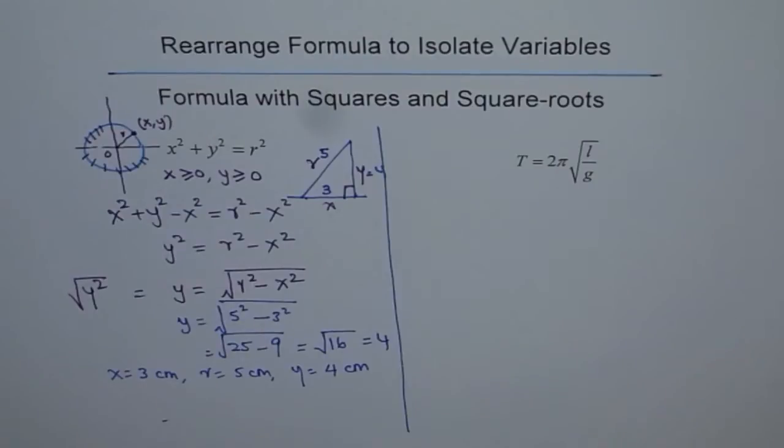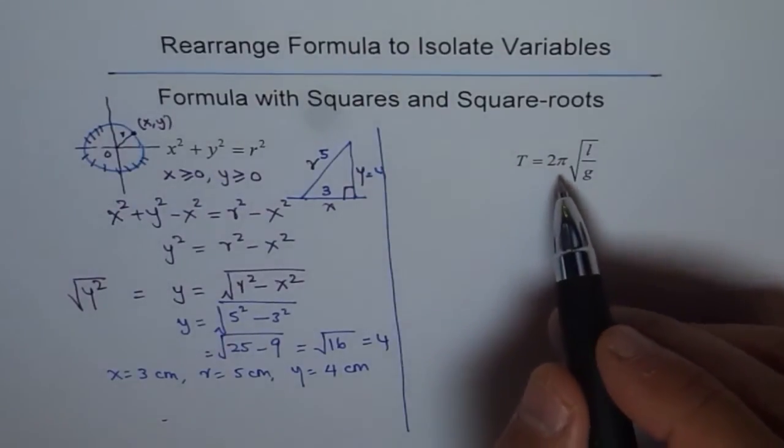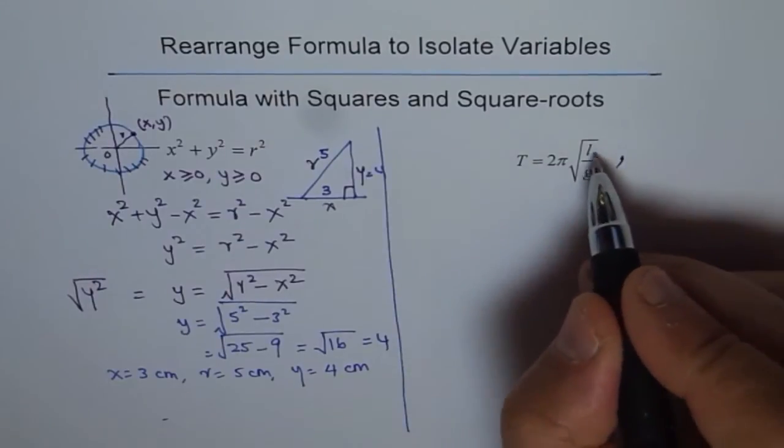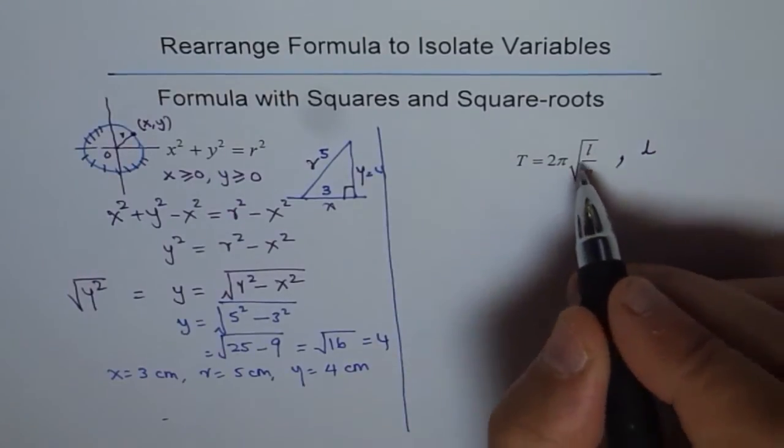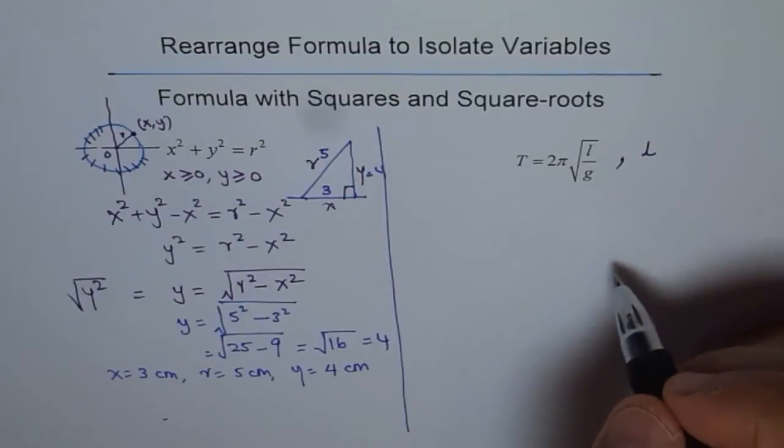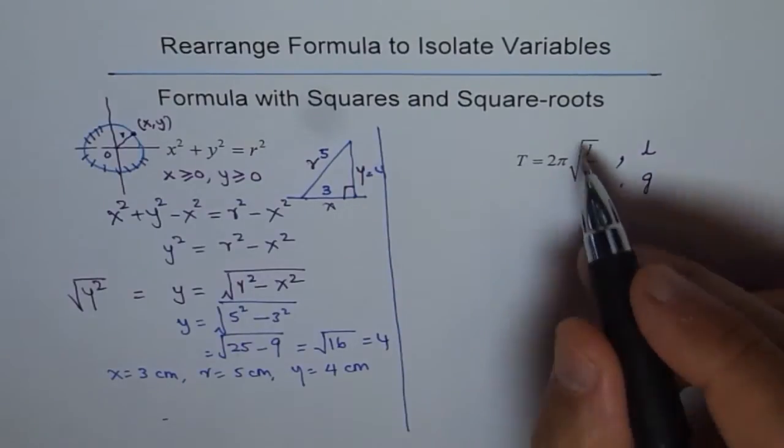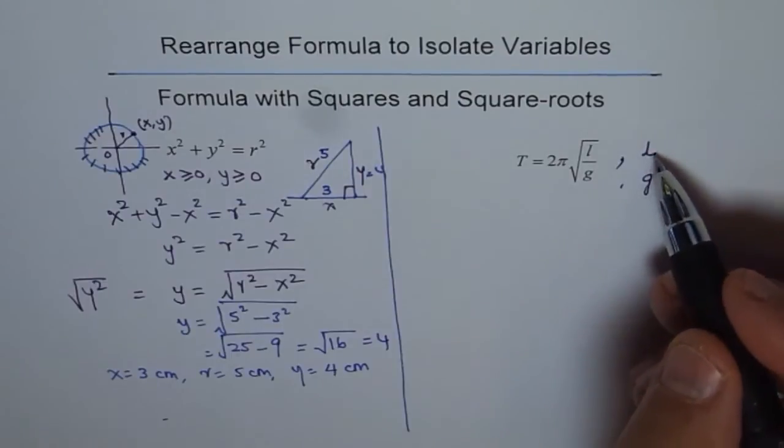Now let us look into the next formula, which is T = 2π√(l/g). Let us try to figure out what is l from here. You can do on your own what is g. I will show you the method for finding l.